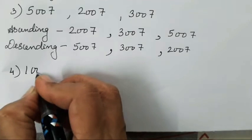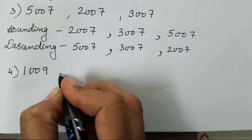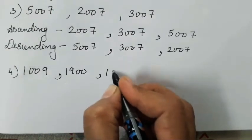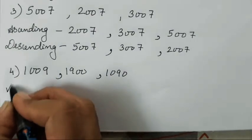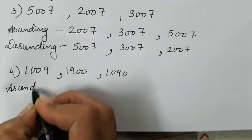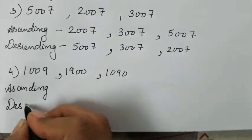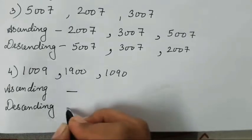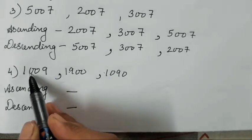Now let's solve the fourth sum. Fourth sum is again very difficult because it has the same numbers. 1009, 1900 and 1090. All are looking same. So what you have to do is check digit by digit. And for that you have to understand how to read the numbers. Now over here 1, 1, 1 is there.